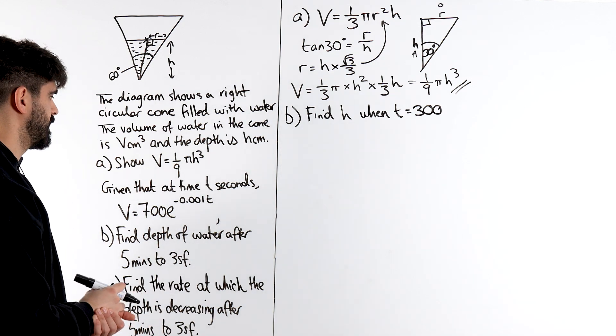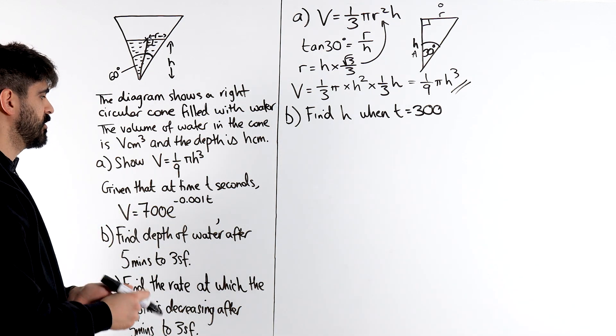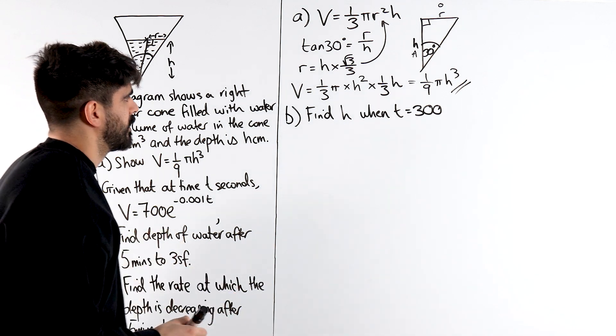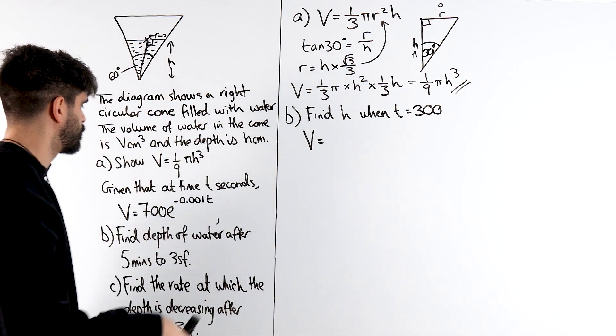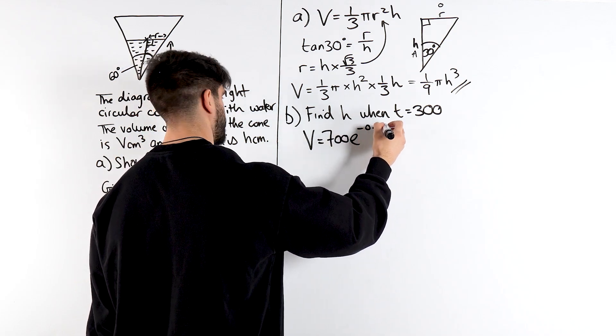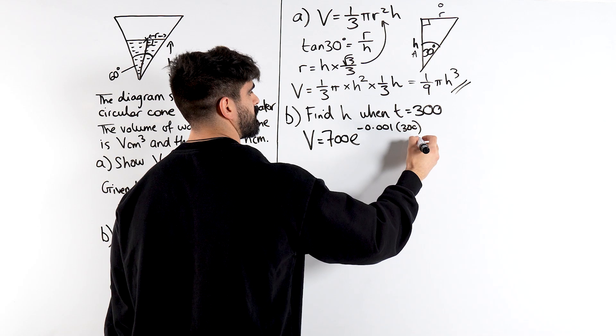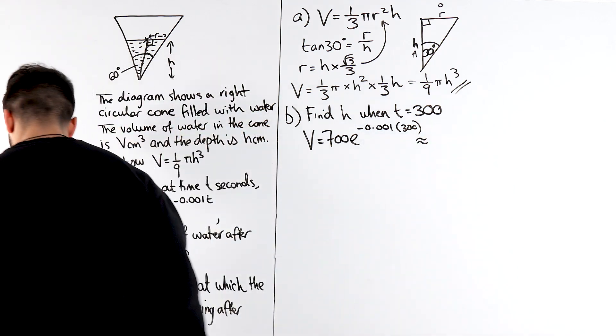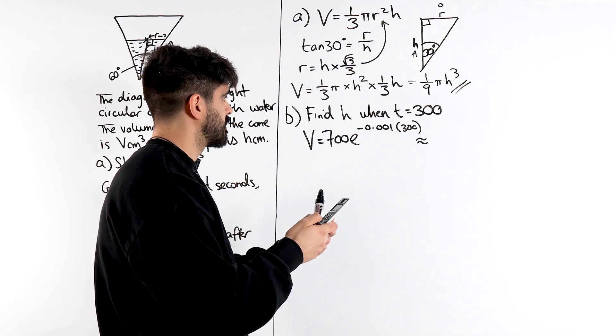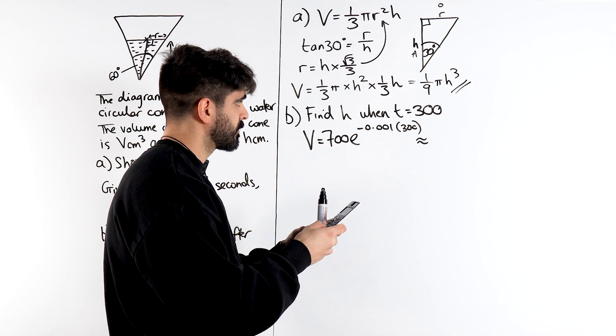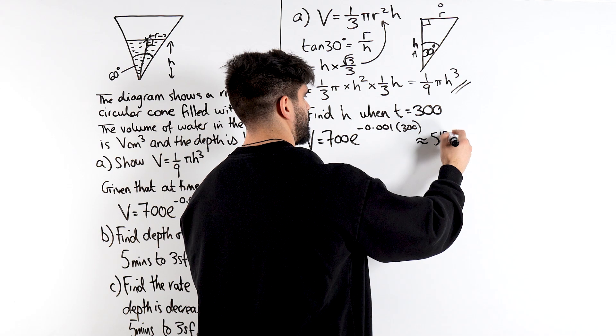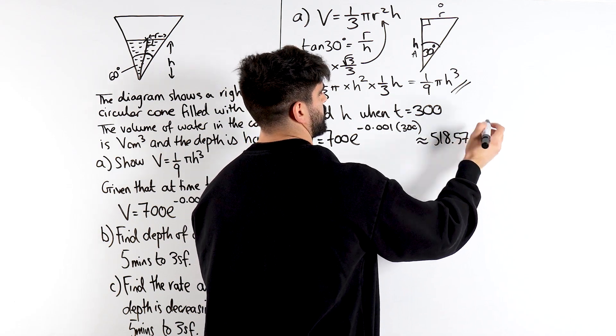Now, the only thing we have is we have volume in terms of time. So, it looks like if time is 300, we can work out the volume. And then we'll figure it out. So, what's the volume here? We're going to get 700 e to the minus 0.001 times 300, which is approximately 518.57.